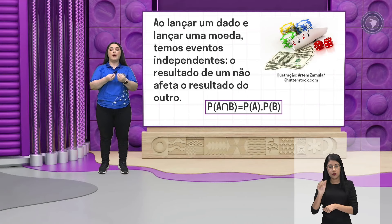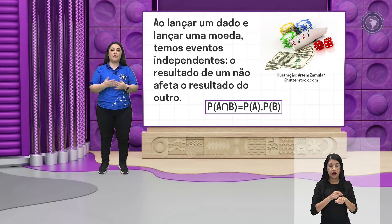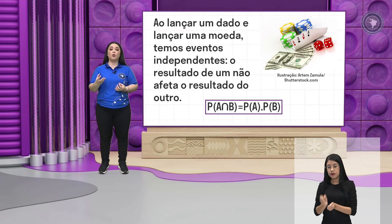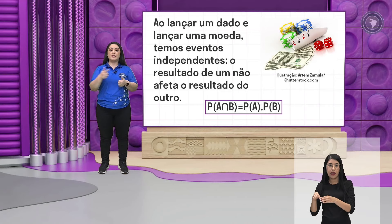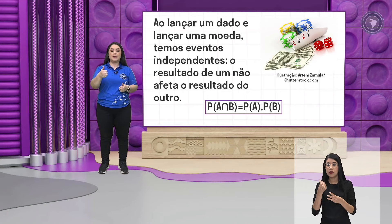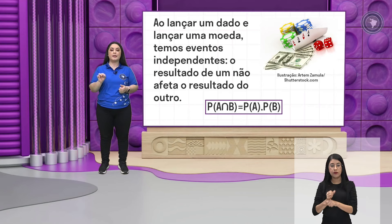Então, eu tenho o lançamento desse dado e o lançamento dessa moeda, e o resultado deles não vai interferir um no outro. Por exemplo, eu lanço o dado e quero números que sejam pares. Qual é a probabilidade de sair um número par quando a gente lança um dado de seis faces? Os números pares de 1 a 6 são 2, 4 e 6. Então, a minha opção é 3 em 6, porque são 3 pares e o total do espaço amostral é 6. Ficaria aí 3 sobre 6.